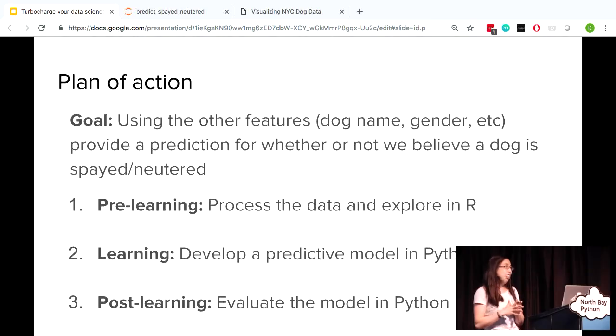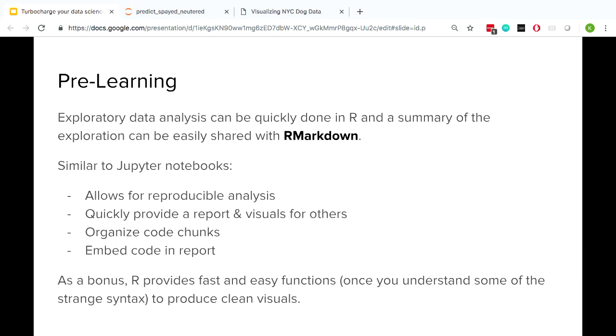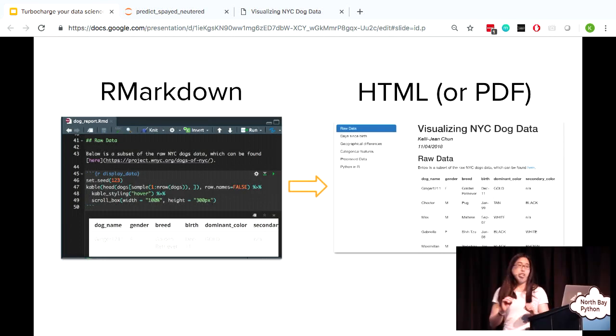So the plan of action for this dog data set is to use the other variables, aka features, such as the dog name, gender, et cetera, to provide a prediction for whether or not we believe a dog is spayed or neutered. And the pre-learning, I'll do in R, and the rest I'll do in Python. The EDA part can be quickly done in R, and we can easily share this if we use R markdown. So by now, you've seen a lot of presentations where you've seen Jupyter notebooks, and we saw how great it was. It allows for reproducible analysis. You can organize your code chunks. It's easy to provide reports to others with Jupyter notebooks. And R markdown is very similar. But I would say one big pro for R markdown is that once you get a handle of the weird syntax in R, it provides very clean visuals. So I typically elect not to use Python, and I use R markdown.